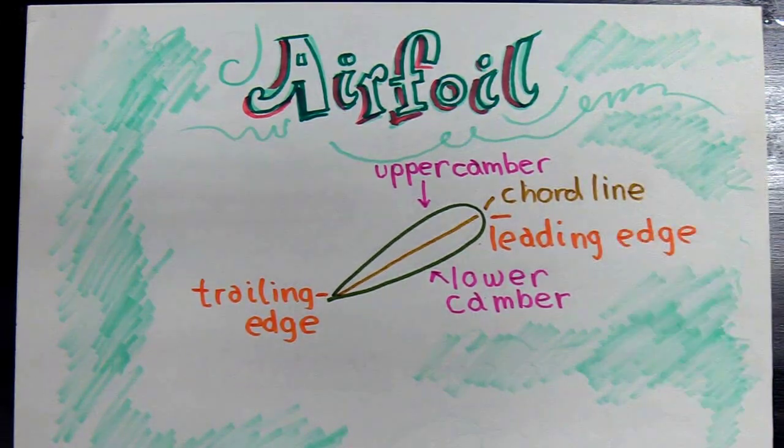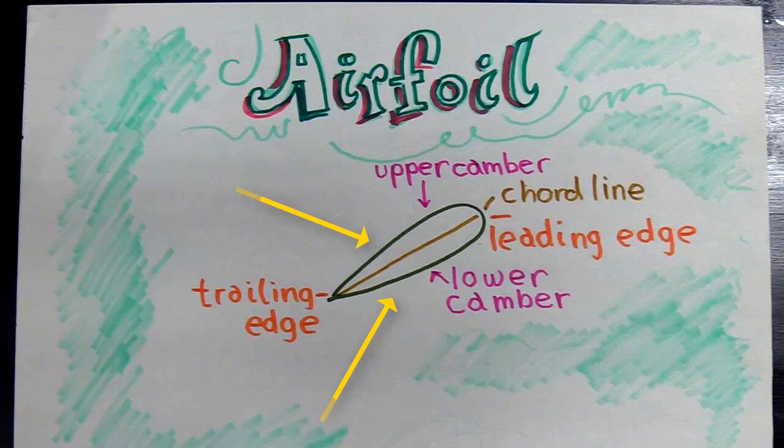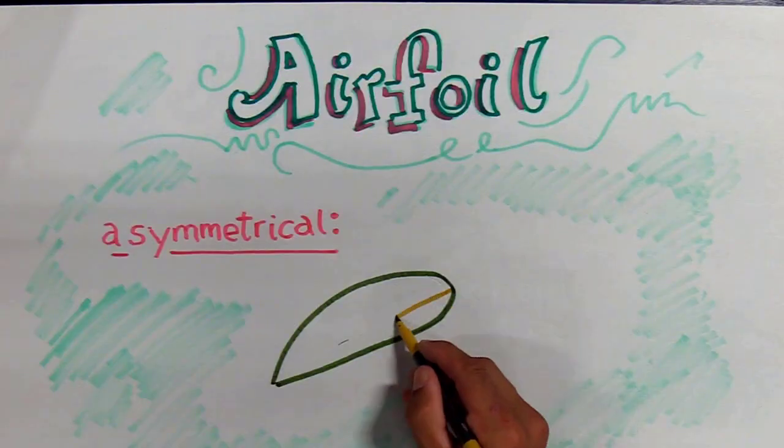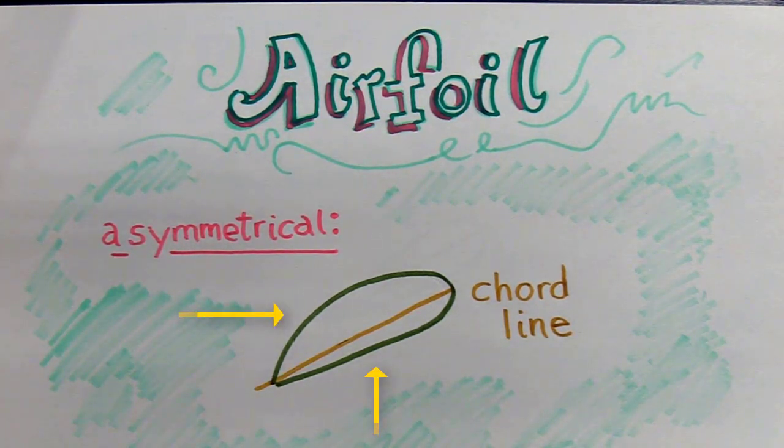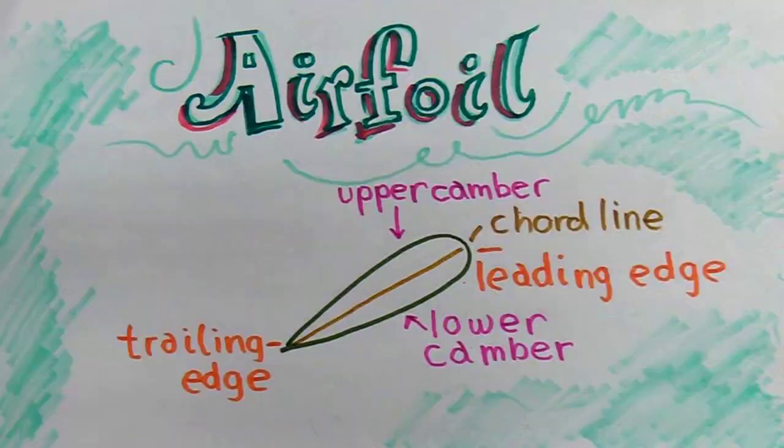Now what I've drawn here is a symmetrical airfoil in that the upper and the lower are the same. Now if I draw an asymmetrical airfoil it would look something more like this. If I draw the chord line you would see that the upper camber and the lower camber look different, so this is an asymmetrical, this is a symmetrical.